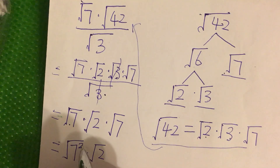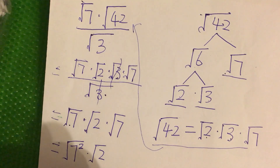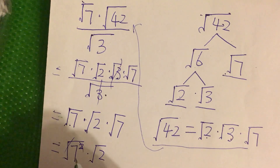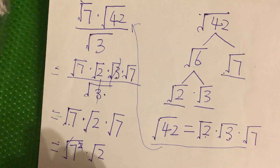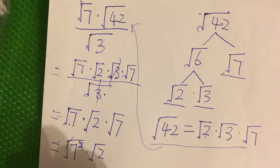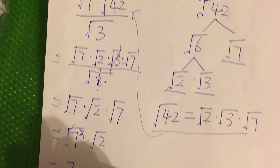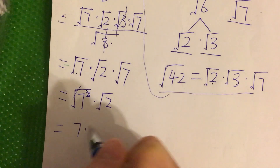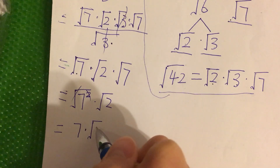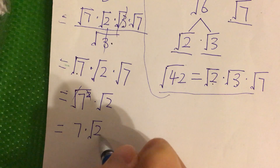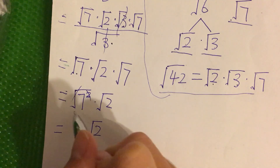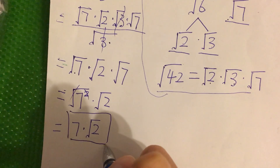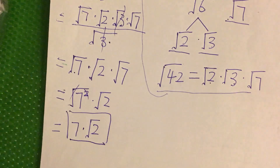The square root and the power of 2 cancel out, so we are left with 2 times square root of 2. That is our answer. Thank you.